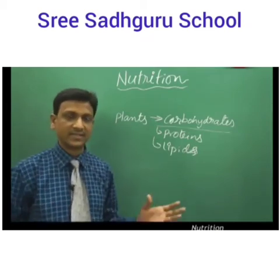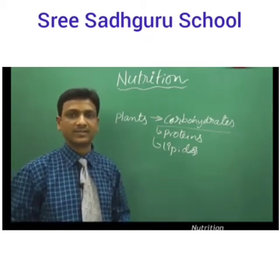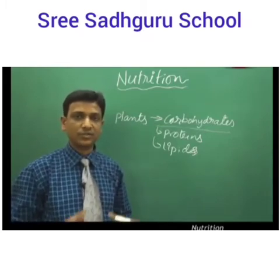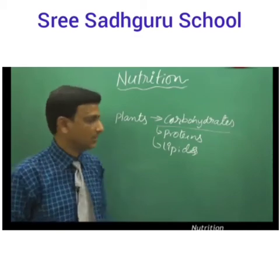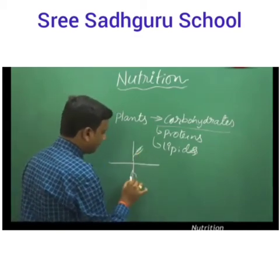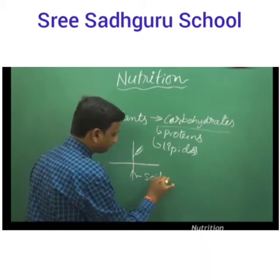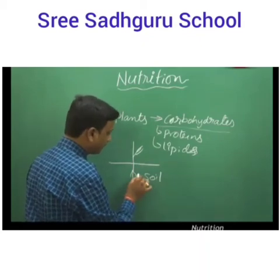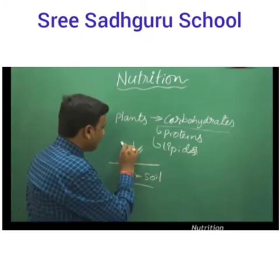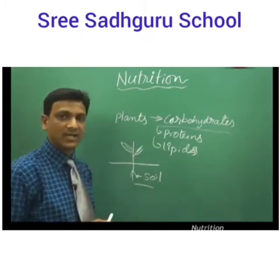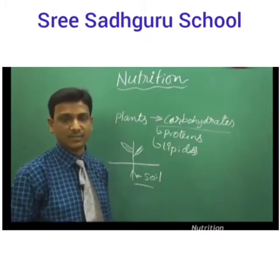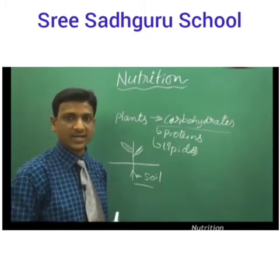What are the materials that the plant uses? We discussed that carbon dioxide, water, and some minerals are needed. The source of minerals is the soil — the soil supplies the minerals to the plant. Apart from the soil, the plant requires some other materials as well.